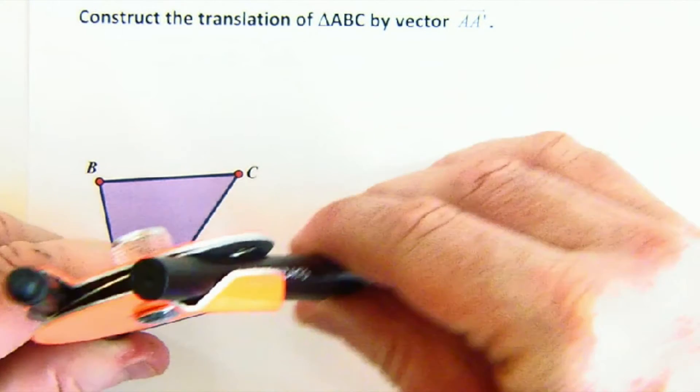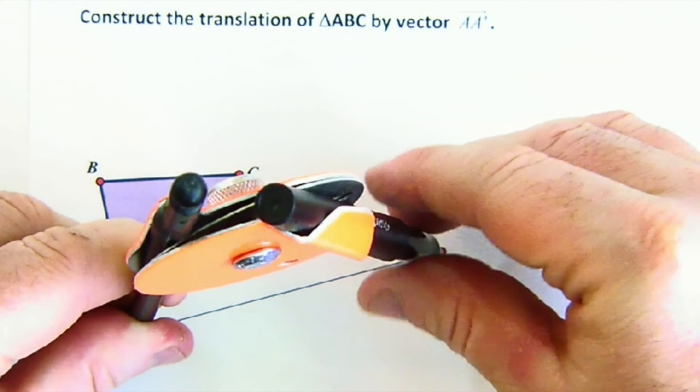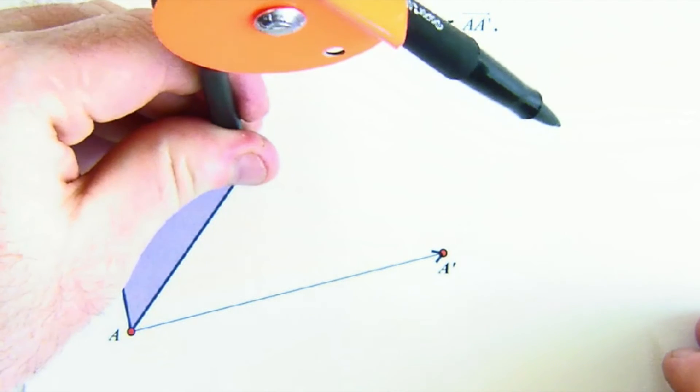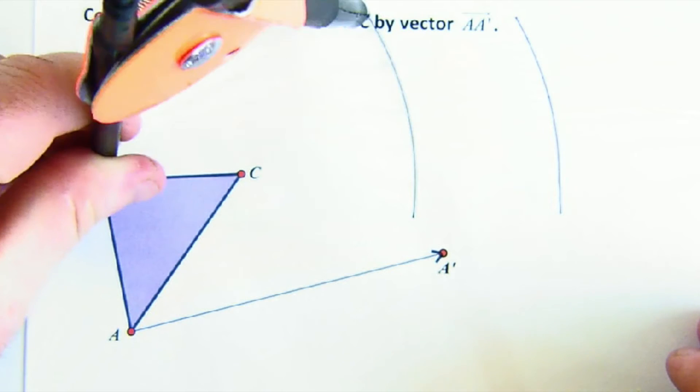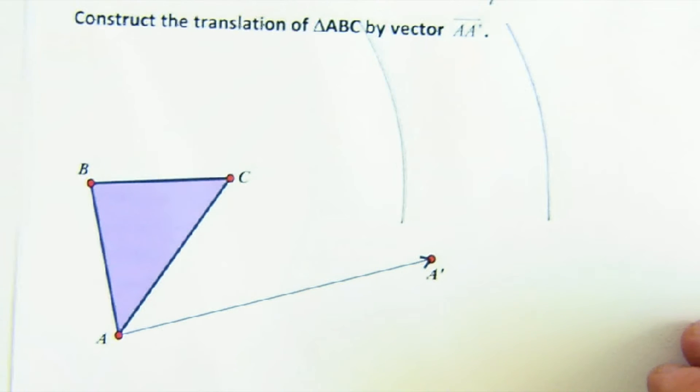Again, here's our fixed distance. A to A'. C's got to go that far. B's got to go that far. So I mark the distances first.